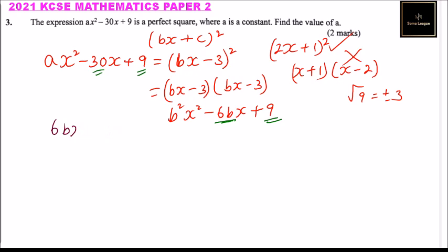The coefficient of x is 6b, so we can solve for b. Dividing both sides, b = 30/6 = 5. Now we can find the coefficient of x².